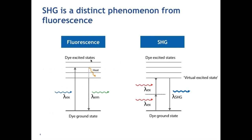This slide gives you an overview of how SHG occurs and is different from fluorescence. In fluorescence, you have absorption of a blue photon into an excited state, followed by emission of a longer wavelength or lower energy photon in the green. In SHG, we don't have an absorption event — we have a reflection or scattering event. We have two photons of red light that are scattered by the dye to produce one photon of blue light. We detect the blue light, which is the second harmonic light, and that is the basis of our technology.